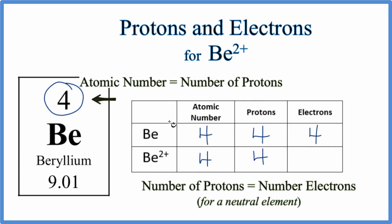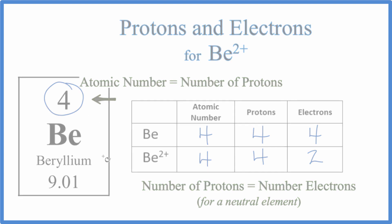Let's go back to our table. The neutral beryllium had four electrons. The 2+ means we lost two. So we have two electrons for BE2+. That's how you find the protons and electrons for BE2+. If you need help finding the neutrons, there's a link in the description to a video for how to do that. This is Dr. B, and thanks for watching.